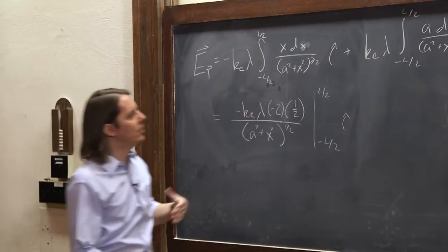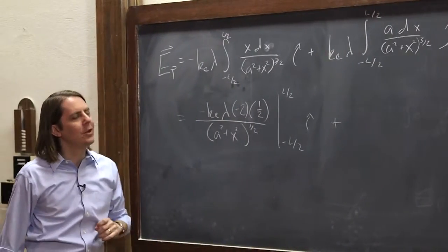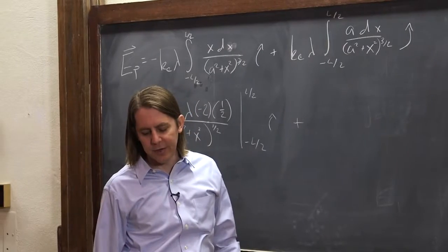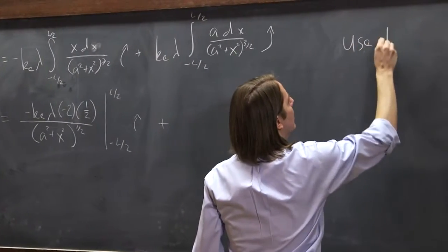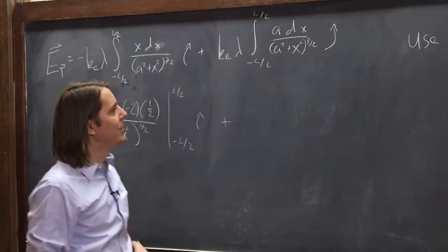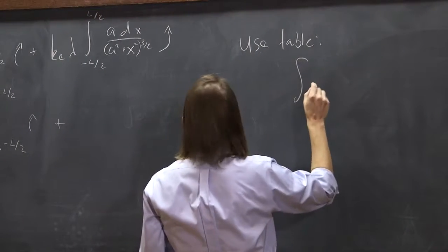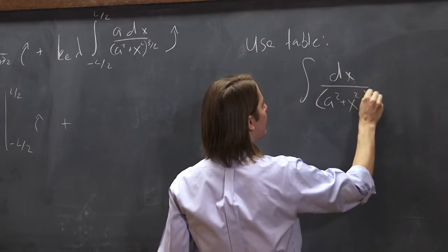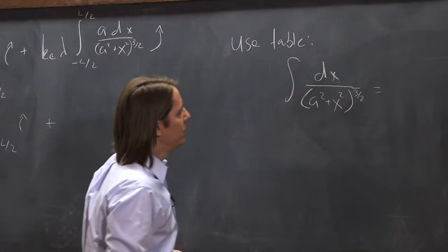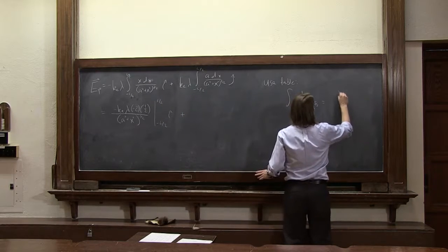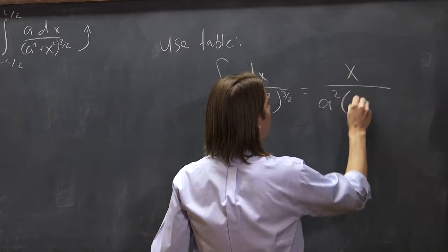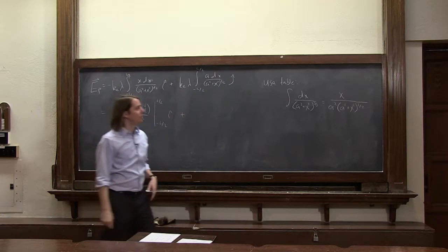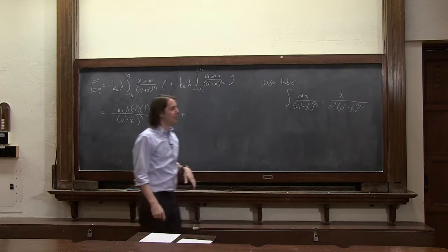We'll do the evaluation in a minute. Now this other integral, you can't do as straightforwardly. You can't just bring it up to the minus 1 half and divide, because you'd divide by minus 2x and there's no x there to cancel it out. So for this, we're going to use a table — I looked up this integral in a table. The standard form is: the integral of dx over (a squared plus x squared) to the 3 halves equals x over a squared times (a squared plus x squared) to the 1 half in the denominator. If you don't believe it, take the derivative of the result — it'll turn into the integrand.